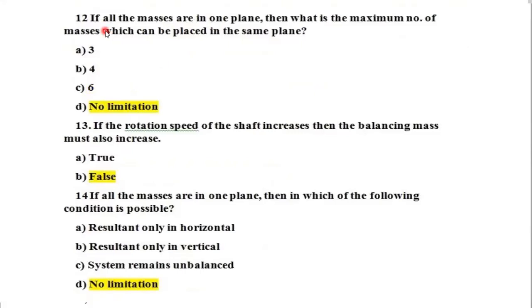Question 12: If masses are in one plane, what is the maximum number of masses that can be placed in the same plane? Any number of masses can be placed — there is no limitation. The net result only depends on the sum of vertical and horizontal components and the resultant should equal the unbalanced force. Question 13: If rotating shaft speed increases, balancing mass also increases — this is false. Balancing mass is independent of shaft speed.